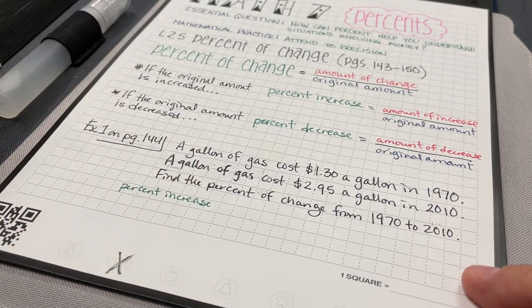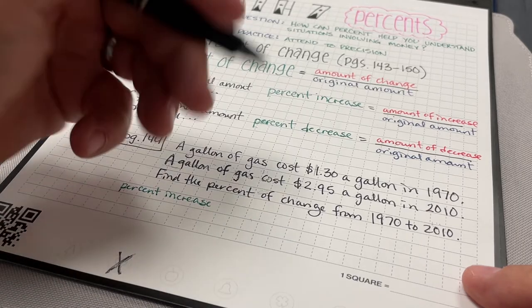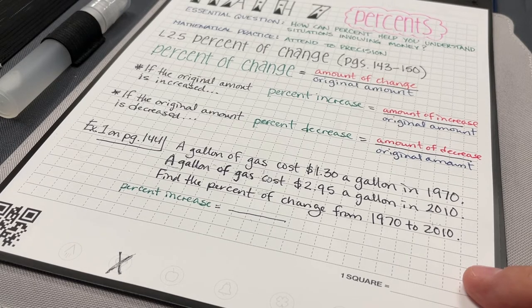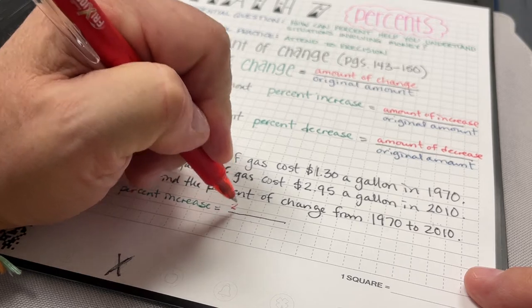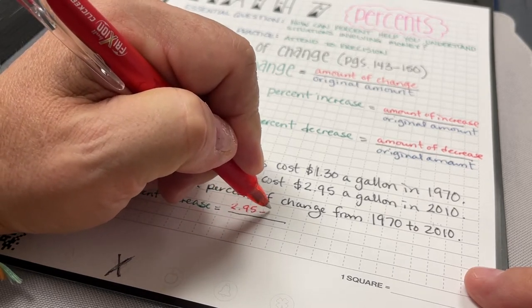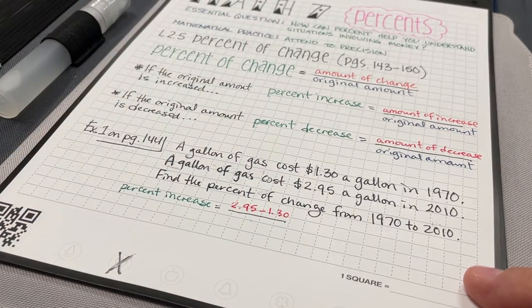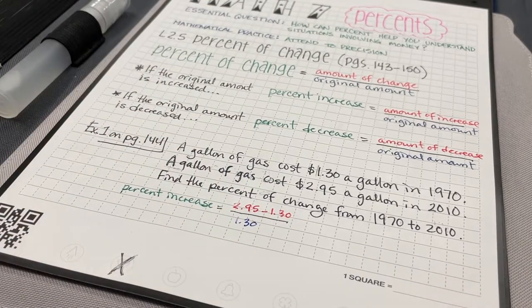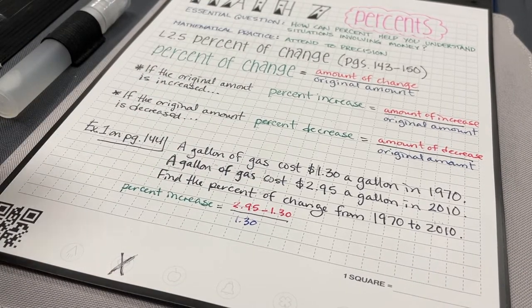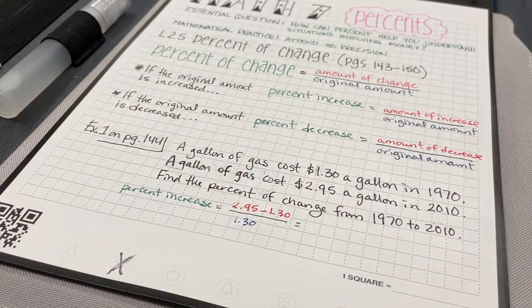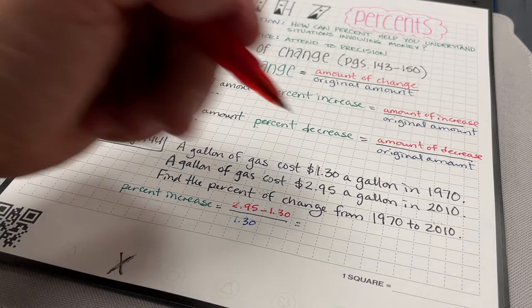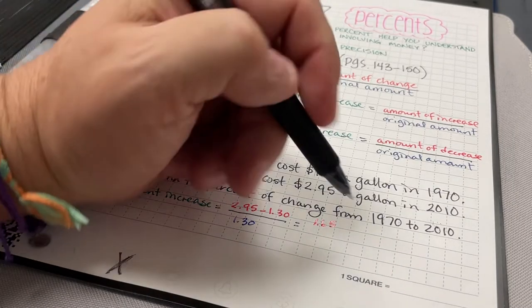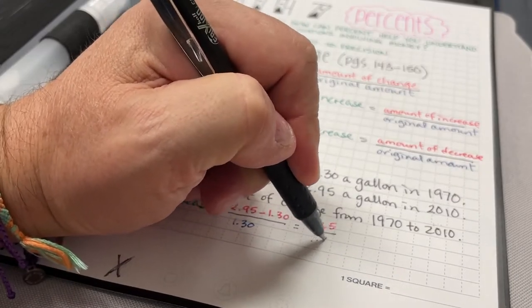So that is going to equal the difference between the two. So it's going to be $2.95 minus $1.30 over the original amount, which was $1.30. $2.95 minus $1.30 is $1.65. And I'm going to divide that by my original amount, which is $1.30.